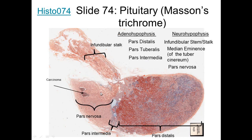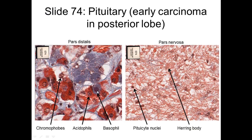This particular patient had a carcinoma located in the pars nervosa. If we look at the pars distalis we can see basophils — those are basophilic, blue-staining — and acidophils that are red-staining. And chromophobes are those that do not take up stain, so you can't see the cytoplasm because they're not stained.